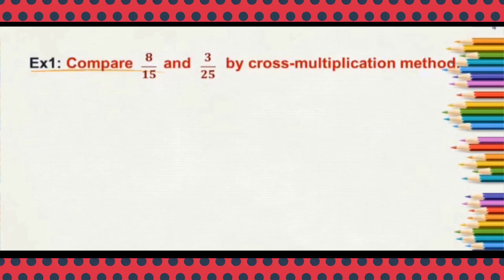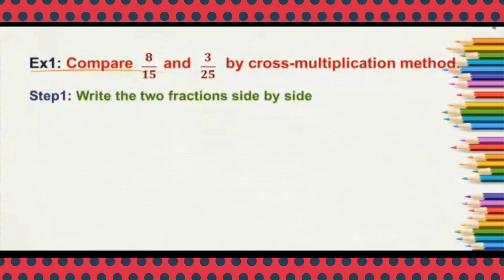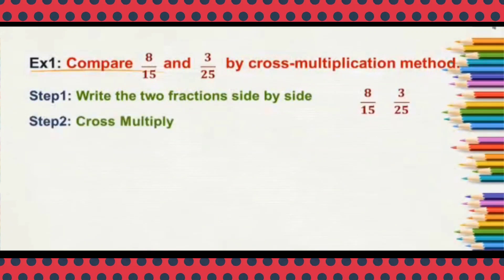First step: write the two fractions side by side — 8 by 15 and 3 by 25. Next we have to cross multiply 8 by 15 and 3 by 25.